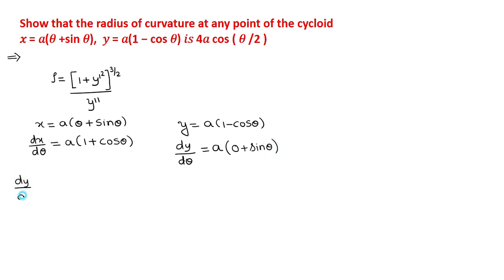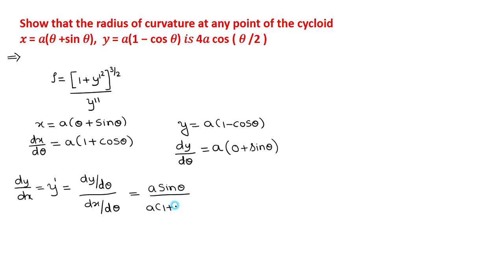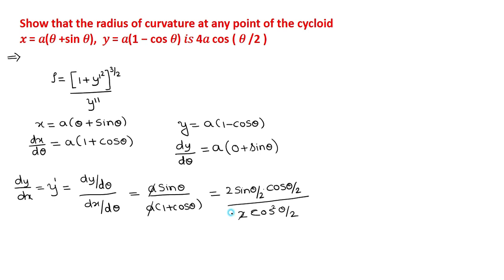The derivative y-dash, or dy/dx, for parametric equations is dy/dθ divided by dx/dθ, which gives a sin θ divided by a(1 + cos θ). The a's cancel. Applying the submultiple angle formulas — sin θ = 2 sin(θ/2)cos(θ/2) and 1 + cos θ = 2cos²(θ/2) — and simplifying sin over cos gives tan(θ/2). So y-dash equals tan(θ/2).